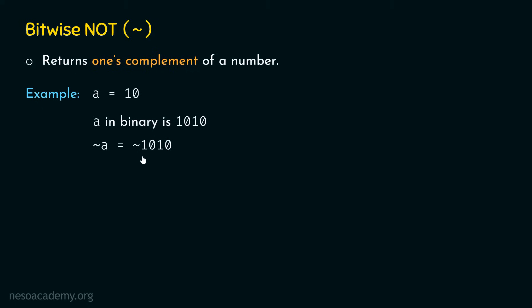NOT of A is equal to NOT of 1010. One's complement means that each bit in the number will be complemented — that is, flipped. So 0 becomes 1 and 1 becomes 0. If we flip each bit in 1010, we get the one's complement: 0101. This is the result of bitwise NOT of 1010.